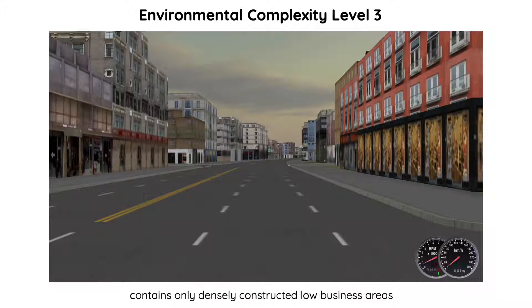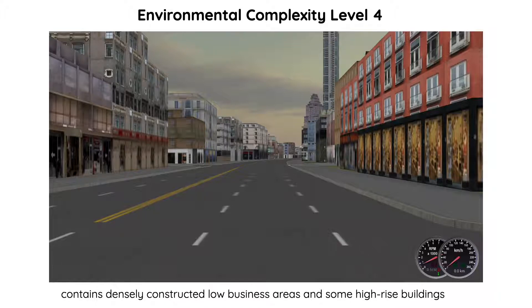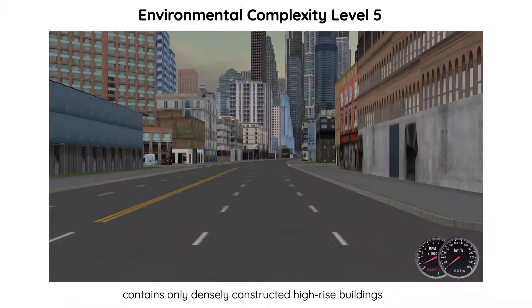An office building scene is an example of environmental complexity level 3, where the road is surrounded by dense office buildings. In level 4 we also have office buildings but with skyscrapers, so it contains densely constructed low business areas and some high-rise buildings. Lastly, at level 5 we have many high-rise skyscrapers in the background, and this is our most complex scene.